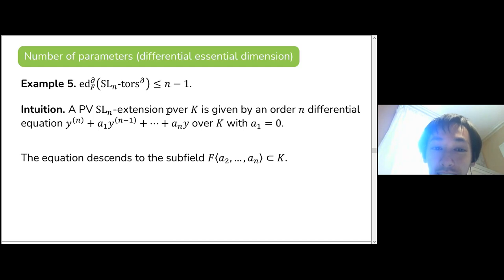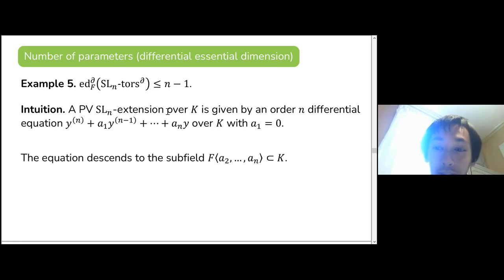Similarly, for SL_n extensions, you can always find a differential equation where the A₁ coefficient is zero, so that requires one fewer parameter.